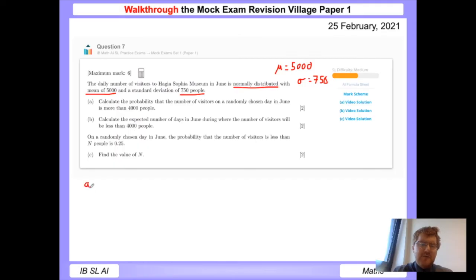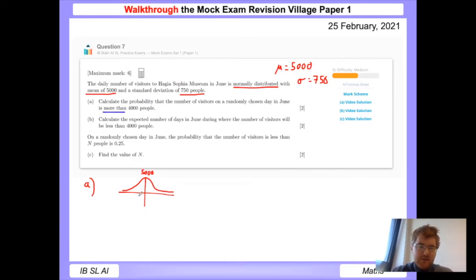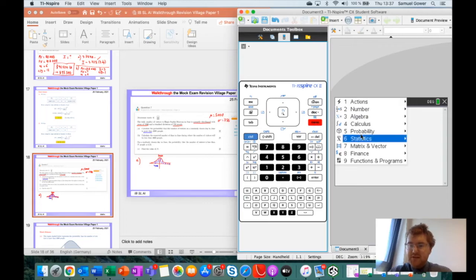We want to calculate the probability that the number of visitors on a randomly chosen day in June is more than 4,000. What's often helpful is to draw a sketch of your normal distribution, which is a bell curve, where this is at 5,000. We're looking for more than 4,000. So 4,000 is on the left-hand side of the mean, basically here. The question wants us to work out this area under the curve.